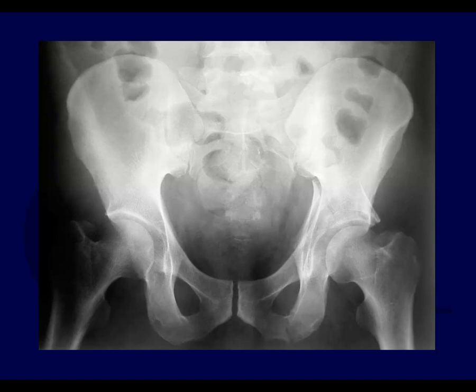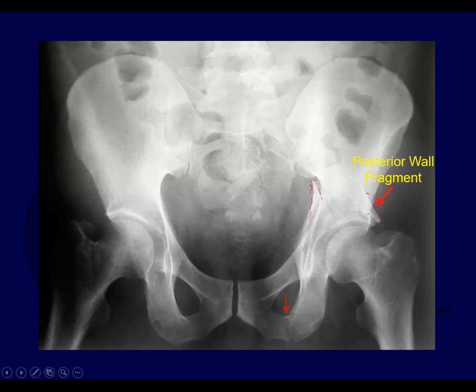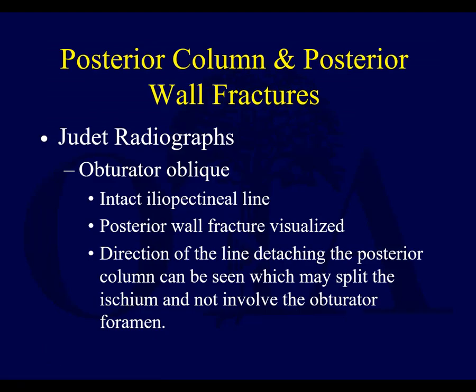On an AP x-ray, you'll see a disrupted ileo-ischial line, disrupted posterior rim, and possibly posterior dislocation of the femoral head. Here on this AP radiograph, you see a disruption of the ileo-ischial line. You also see something going on with the posterior wall, and a fracture line representing the posterior column. There's your posterior wall fragment. Judet views are going to help show this better. The anterior column is intact, with an intact iliopectineal line.